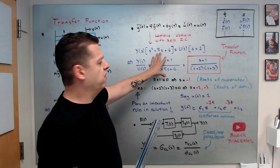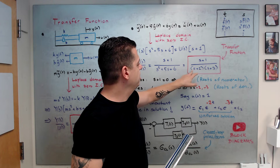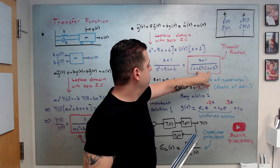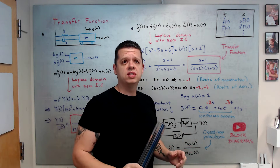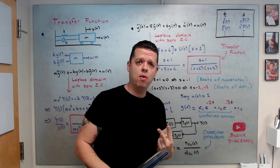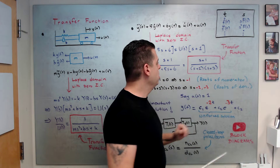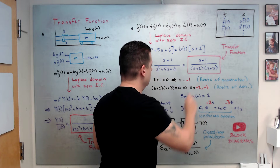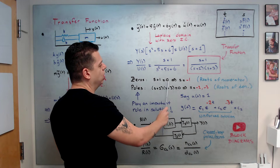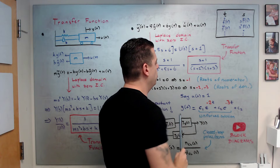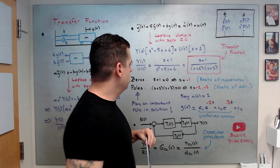This is your transfer function. Written in a prettier factored form: (s + 1) / ((s + 2)(s + 3)) — if you expand that product you get back the original denominator. Now, once you have a transfer function, we define two important things. Zeros are the roots of the numerator; setting the numerator to zero and solving gives s = −1, so −1 is the zero of this system.